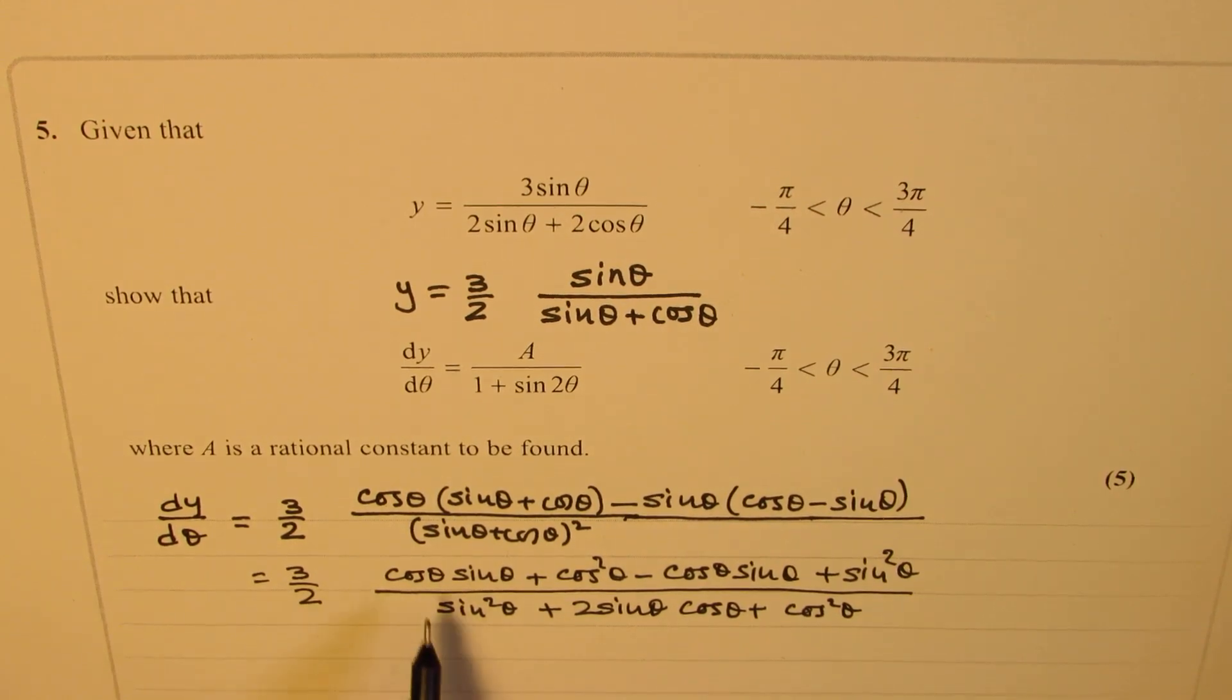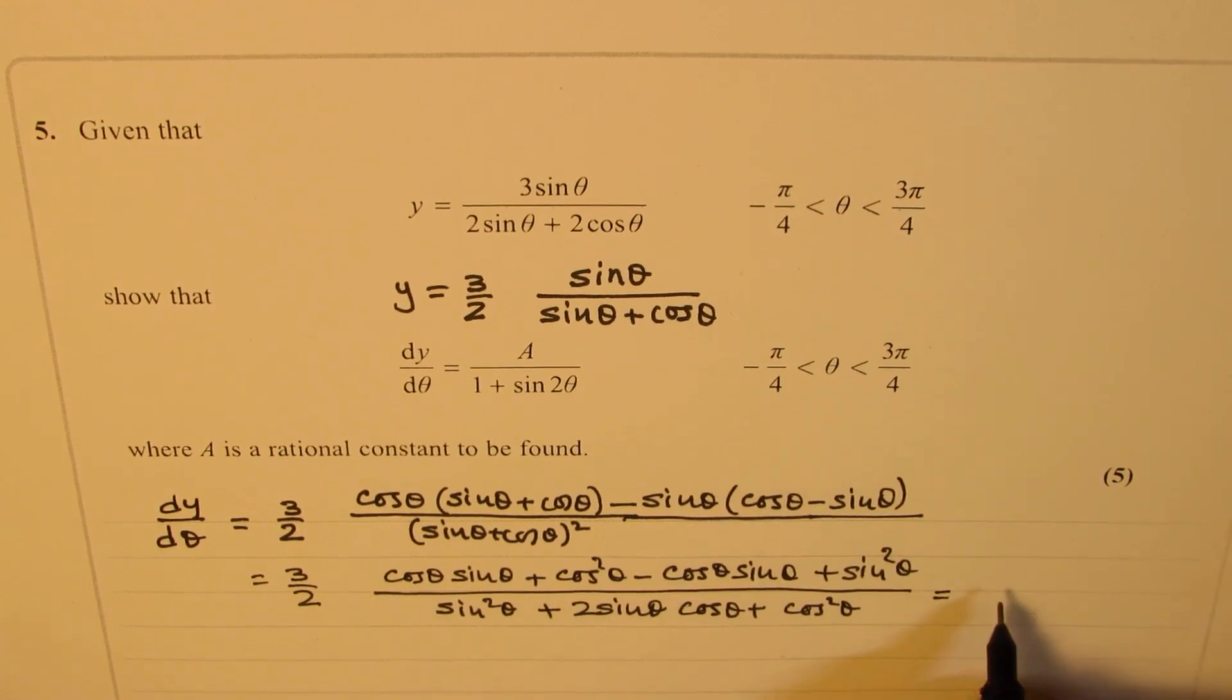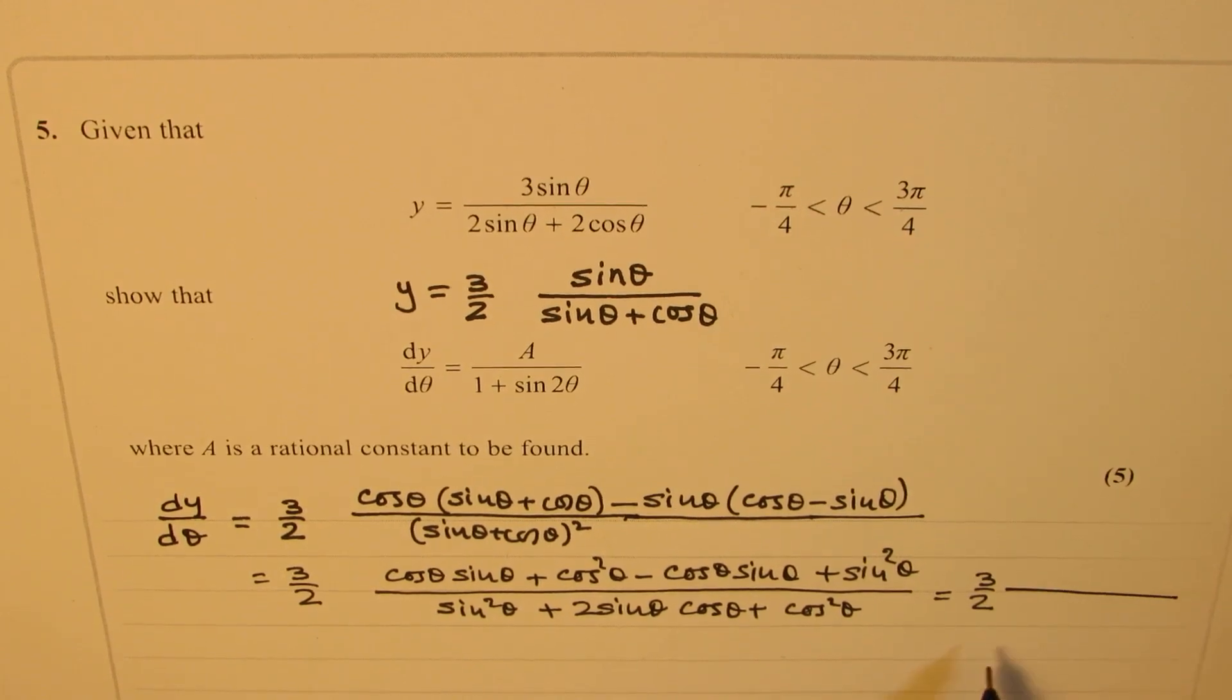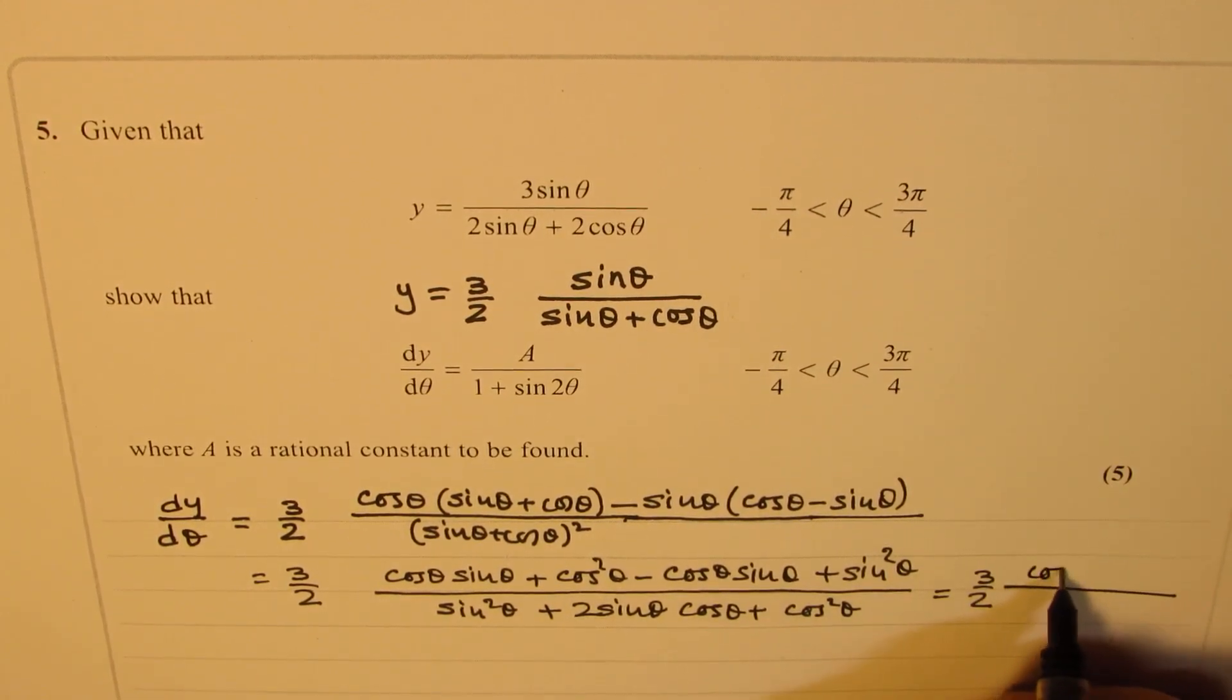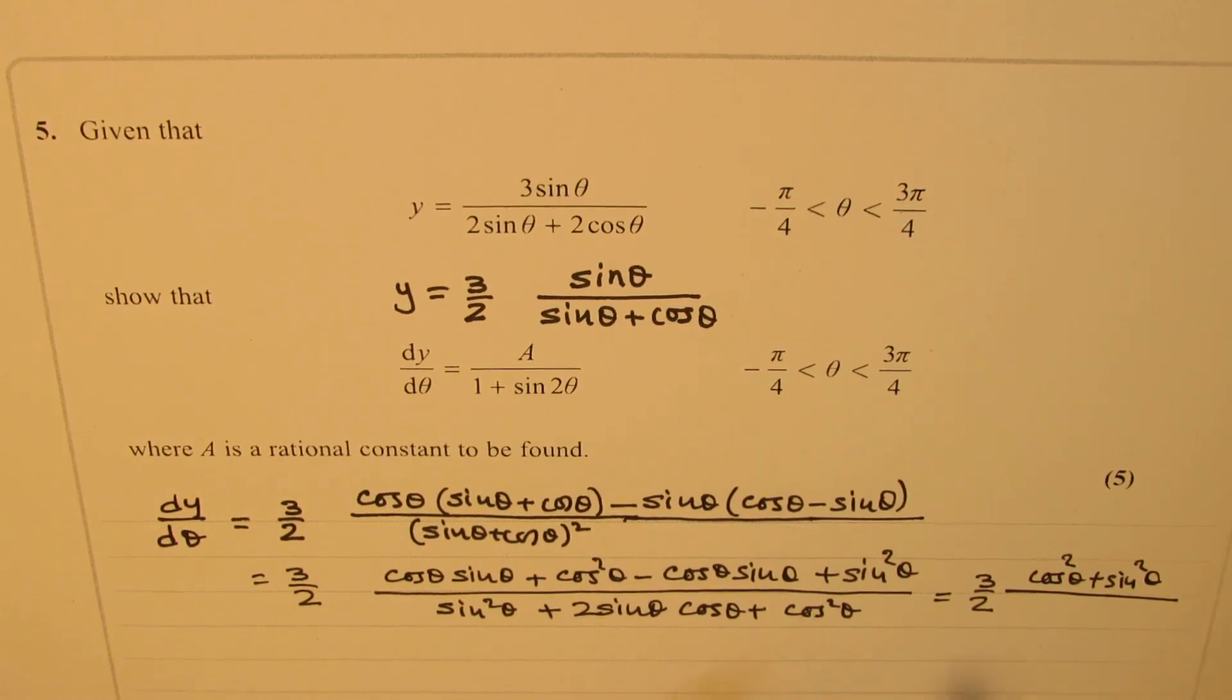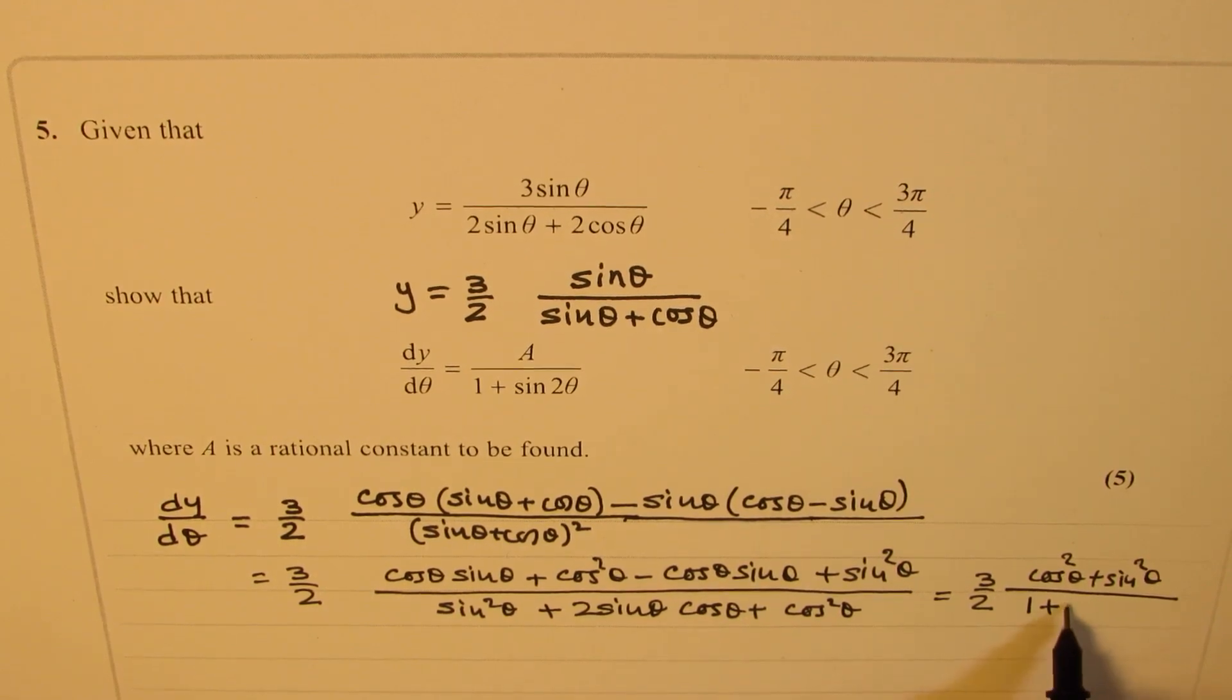And now, as you can see, cos theta sine theta minus cos theta sine theta cancels. It is 0. And sine square theta plus cos square theta is 1. So what we get here is 3 over 2. And the numerator, we get, so let me add one more statement. We have cos square theta plus sine square theta. Here also, we have sine square theta plus cos square theta, which is 1. So let me write this as 1 plus 2 sine theta cos theta.